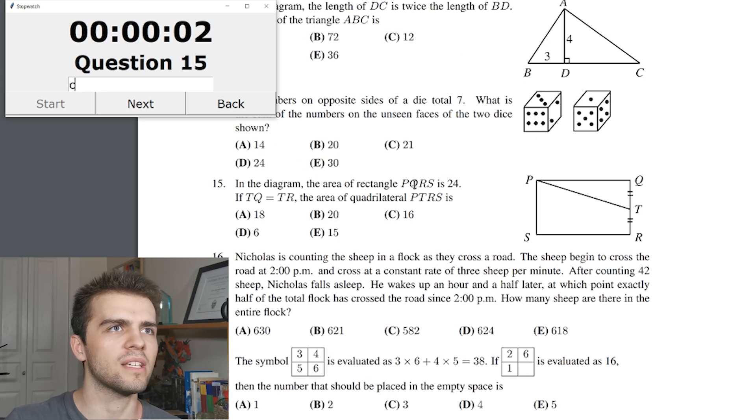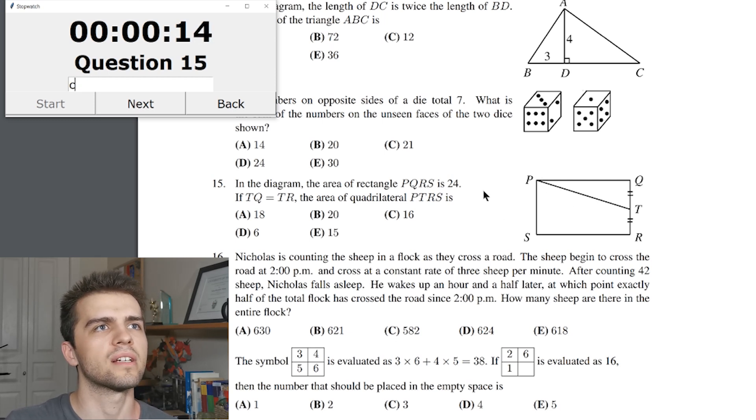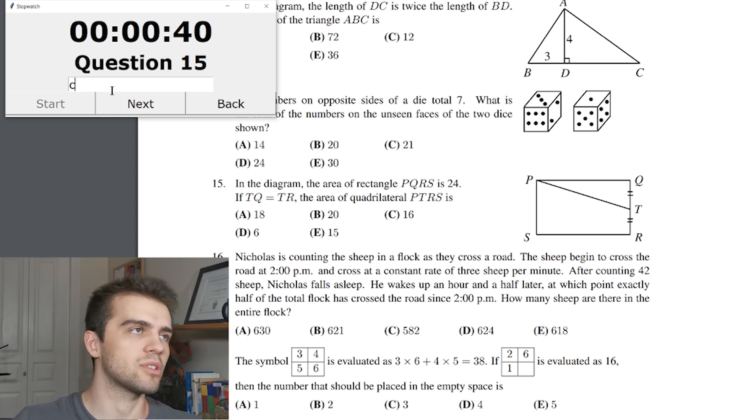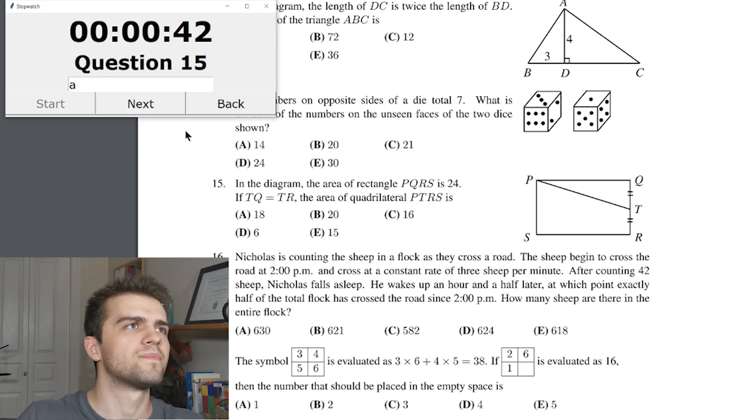In the diagram, the area of the rectangle PQRS is 24. If TQ is equal to TR, so these are equal. The area of the quadrilateral PTRS. PTRS is, well, it's PQRS. PQRS 24. These are equal, so this PTRS. This triangle is one-fourth the area of the square, so this is, because you know that this would cut here and then you get to, like, two things here and then you could split this into four things. Not sure if that's making sense, but I have 24 minus 6, 18. So this area has to be 18, which is A. Good.